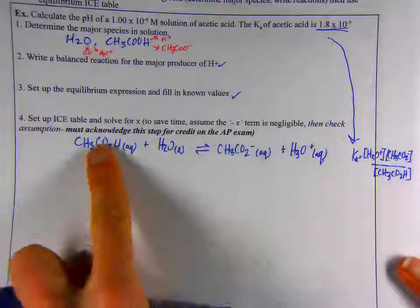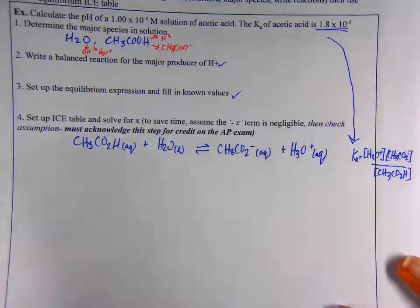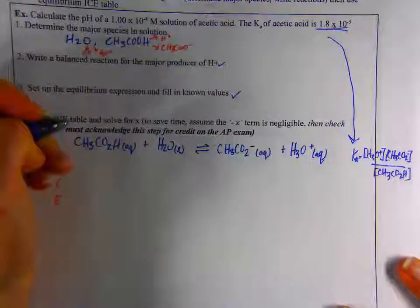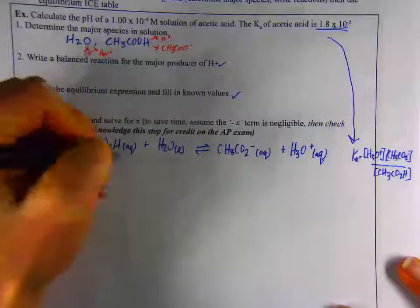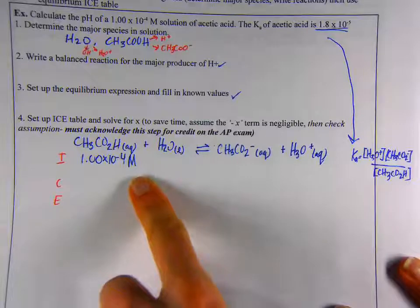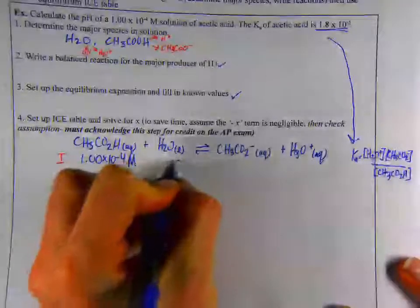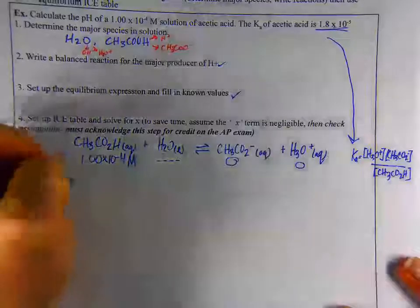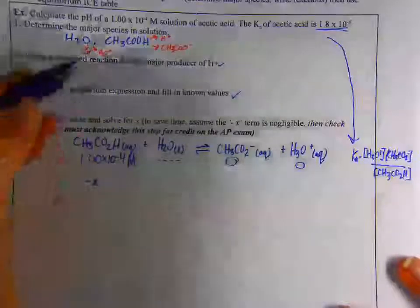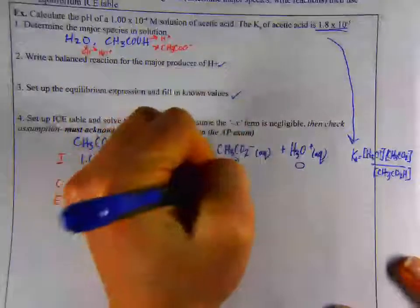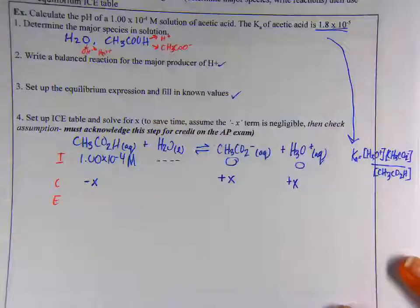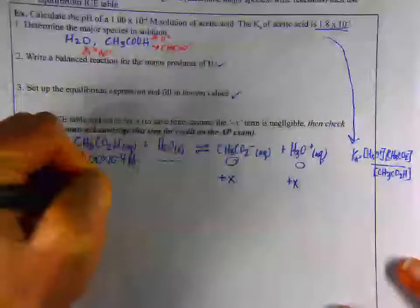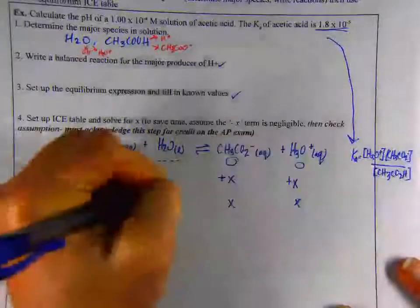Step four is set up an ice table and solve for X. My ice table setup: Initially, what I add to the beaker would be 1.00 times 10 to the negative 4 molar acetic acid. Water we don't worry about because it's concentrated so high. Initially, there's zero moles of each of these products because it takes some time for equilibrium to be established. The change here is minus X. We're going to get X moles of the base and X moles of H3O+. At equilibrium, my values would be 1 times 10 to the negative 4 minus X, and then X and X.